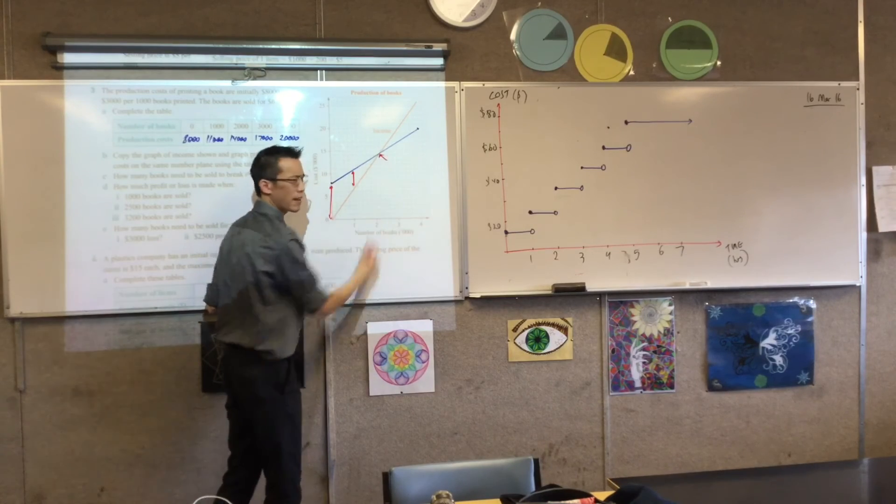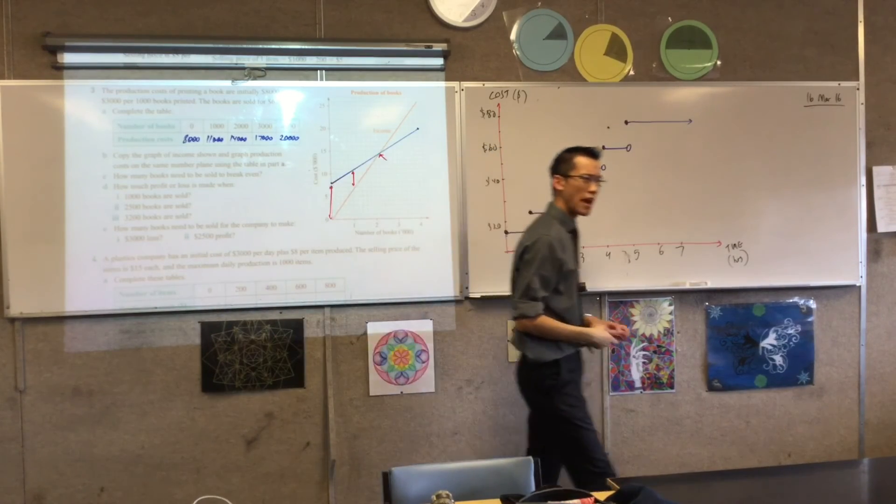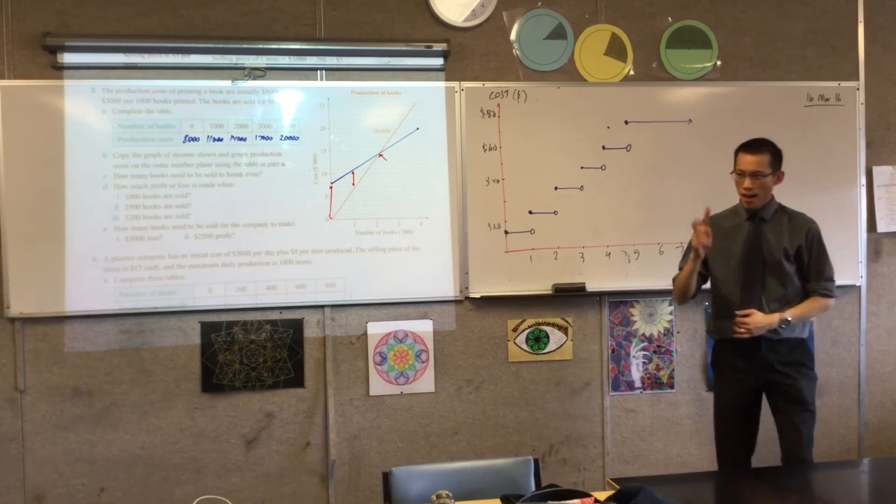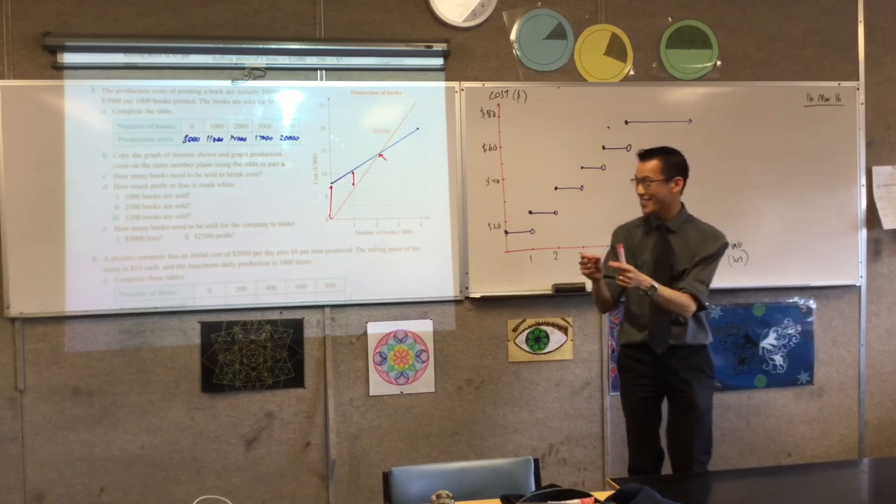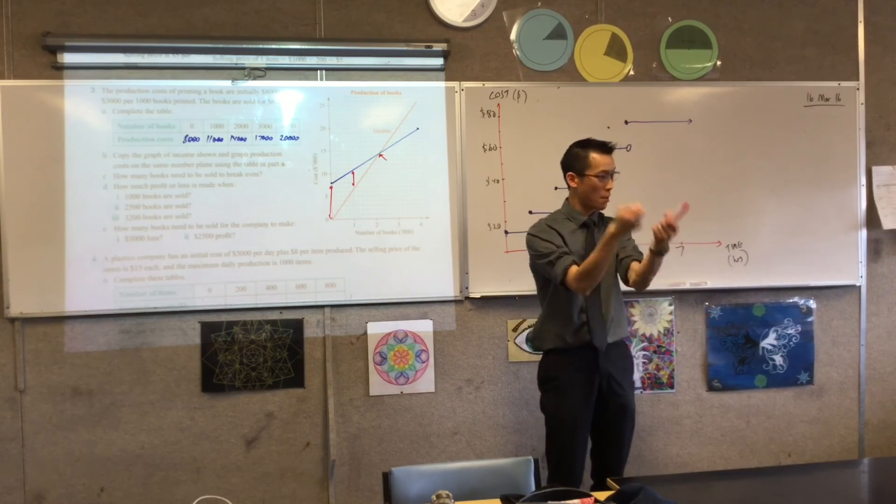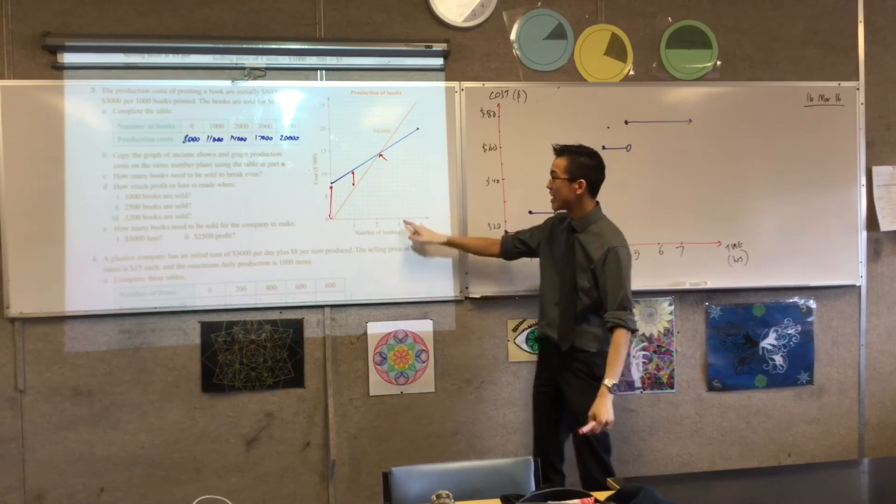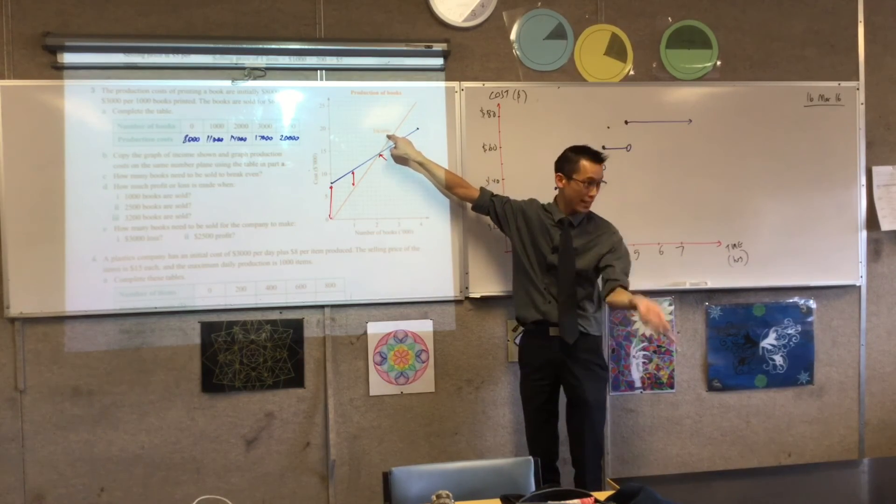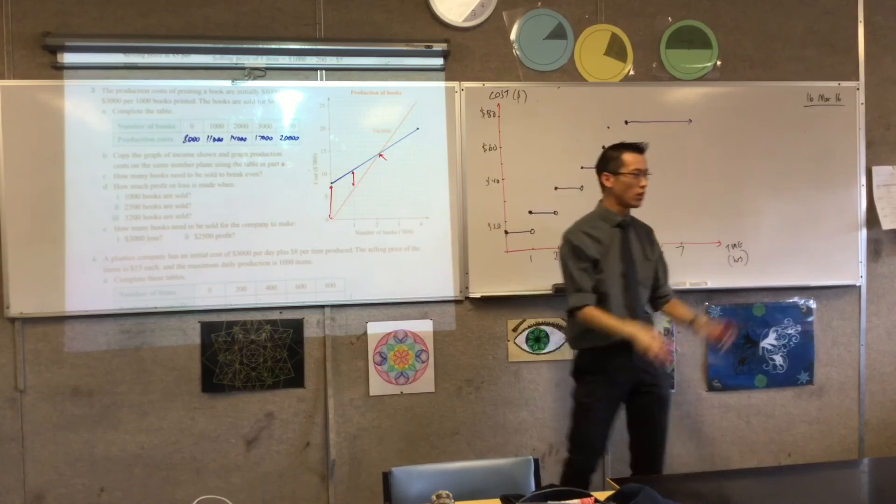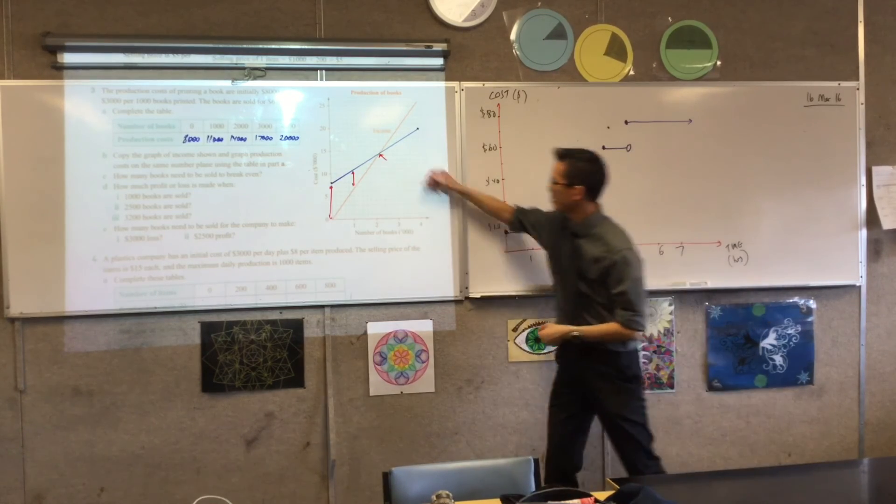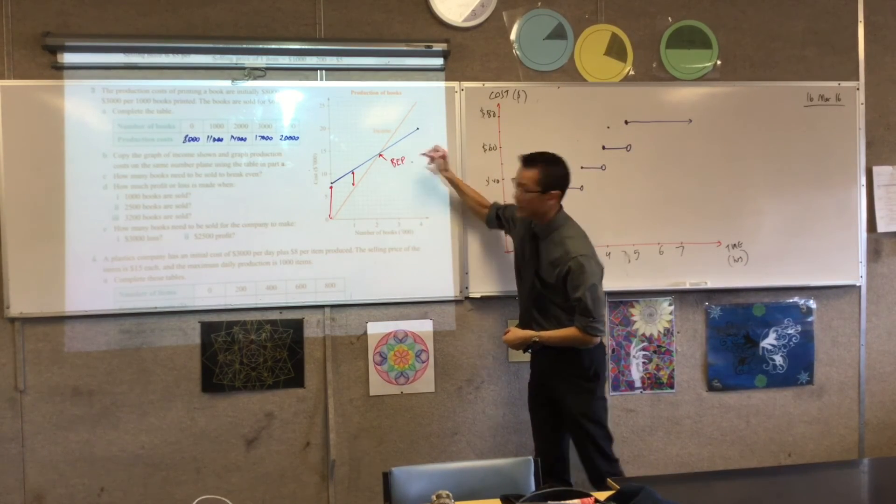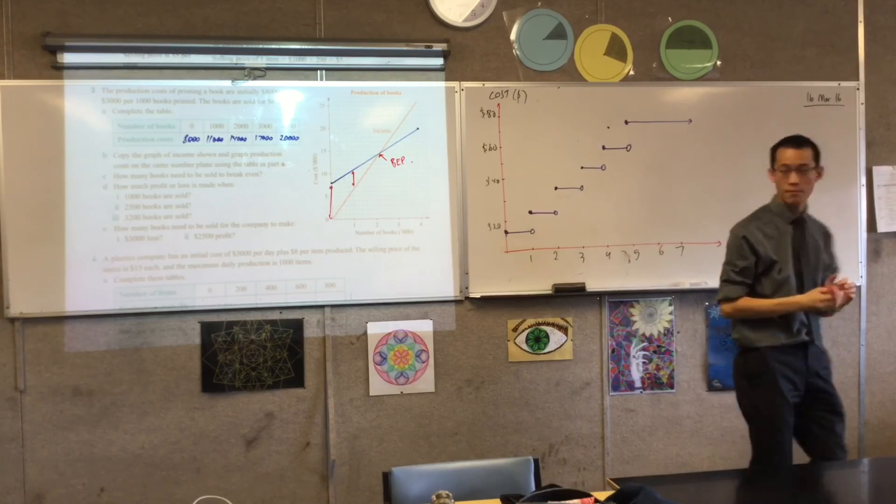What's this point right here? The graphs overlap. The point where you start earning. So this means, right? The exact amount of money I spent to make the books is the exact amount of money I've earned by selling them. This is what we call the break-even point. It's actually a really important economic term.